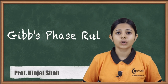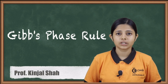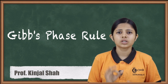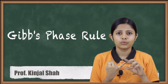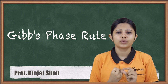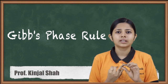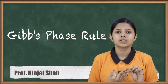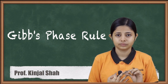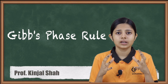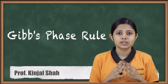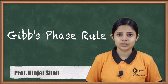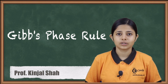Hello friends, in today's session we are going to study about the Gibbs phase rule. Gibbs phase rule talks about three main things: the first is the degree of freedom of the system, the second is the number of components present in the system, and the third is the number of phases a system can attain. How these three things are related is given in the phase rule. Let us see in detail what exactly the phase rule is and how it is derived.